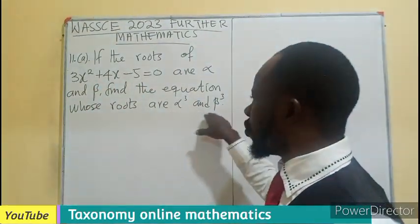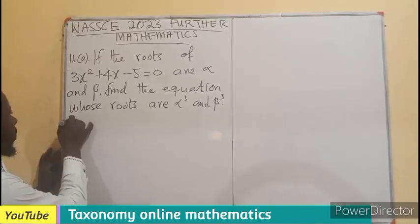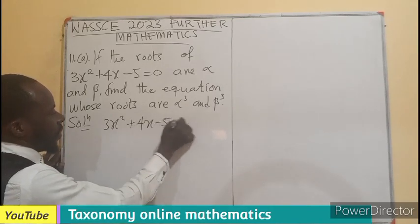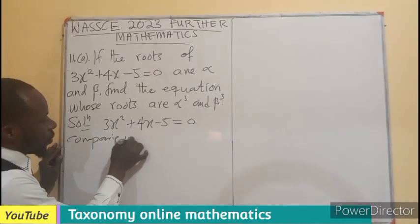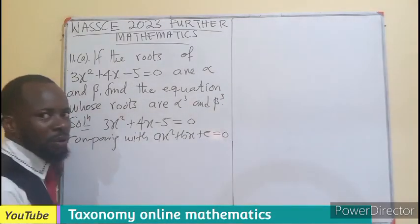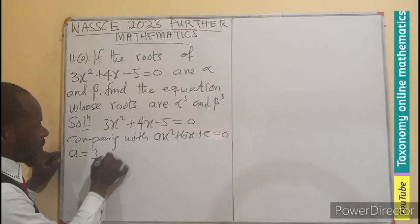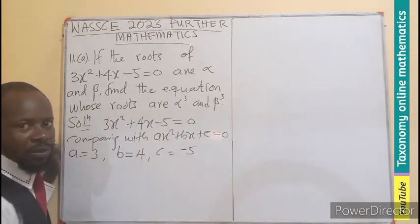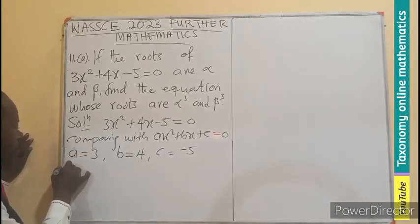Right away, for us to be able to get into the cube, we need to know the sum of the root and the product of the root. So let's rewrite 3x² + 4x - 5 = 0. If we compare with ax² + bx + c = 0, the general equation, we are aware that if you are asked to find the sum of the root...